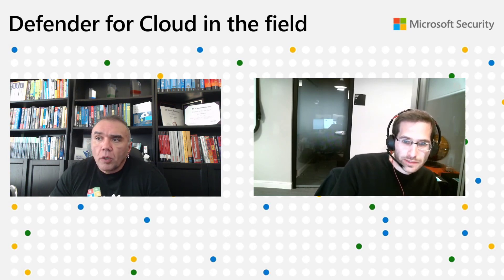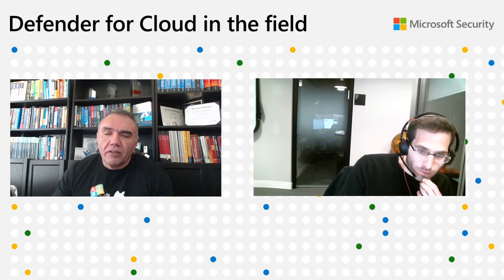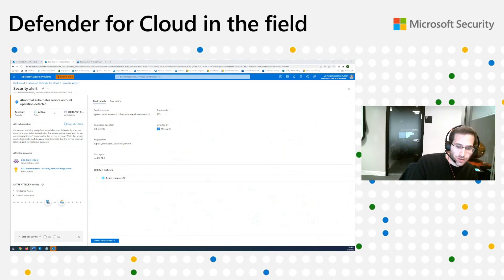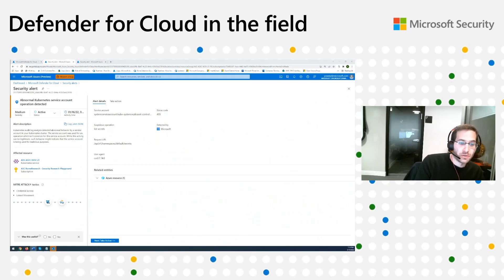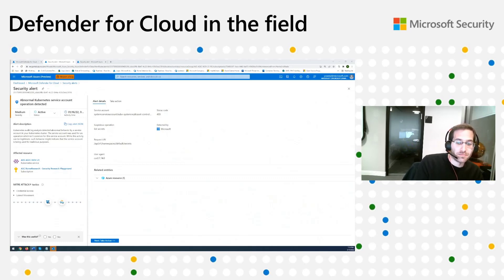In Defender for Containers, we also have a new alert in preview for abnormal activity of managed identity. In some cases, applications in the cluster need to authenticate with cloud resources outside the cluster. Some features of managed Kubernetes clusters are implemented by cloud resources — for example, when you have a service, behind the scenes there is a cloud load balancer that needs to be managed. One method in Azure — common also in other cloud providers — is managed identities: identities managed by the cloud provider that can be attached to virtual machines, in our case the Kubernetes nodes.